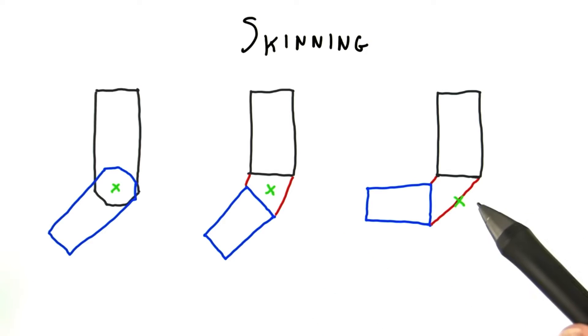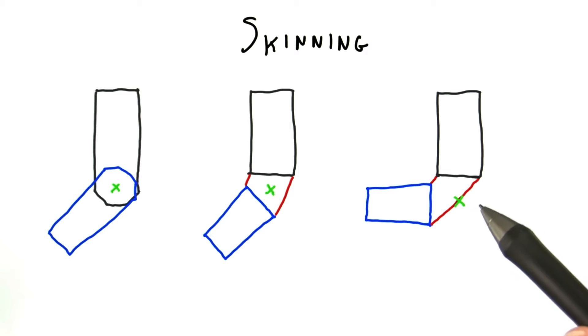This doesn't look very good, as the more the arm bends, the more the joint flattens out. What we'd prefer is something more like a flexible tube that bends but mostly keeps its shape.